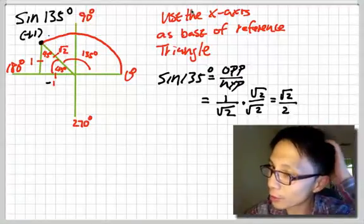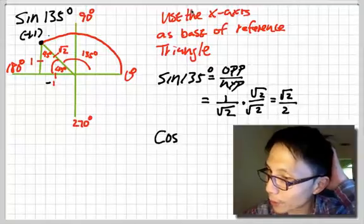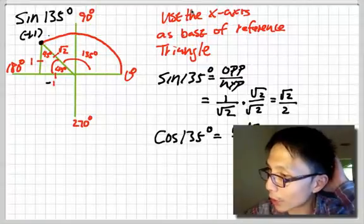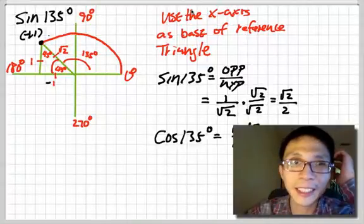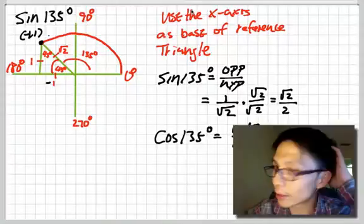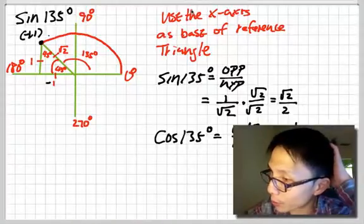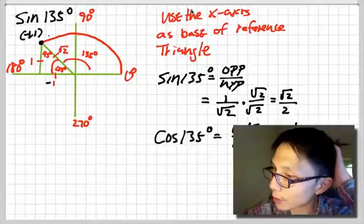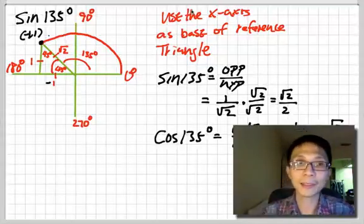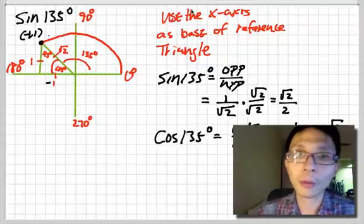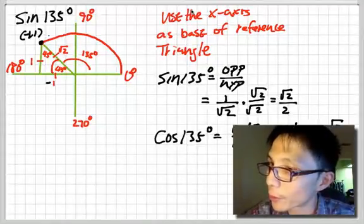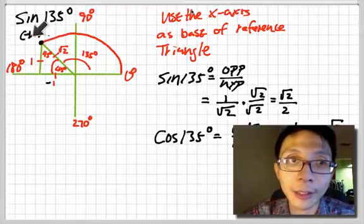However, if we're trying to find cosine of this angle, you have to be careful. Cosine of this angle is going to be adjacent over hypotenuse. The adjacent here is going to be negative 1 over square root of 2. So your answer is actually negative square root of 2 over 2 after you rationalize it. So there's actually a negative sign — you have to pay attention. What this comes down to is: if you find the coordinate of this point, it's going to be negative 1 and 1.